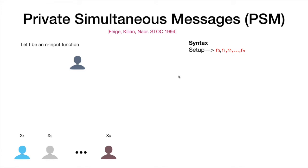The private simultaneous message model was introduced in STOC 1994 by Feige et al. In this work the authors wanted to consider a model that would allow the parties to securely evaluate a function with just one round of interaction. We know this is not possible in general unless we put some restrictions or change the model, and that's exactly what the authors did. They consider a setting where there are two types of entities: the evaluator, which wants to understand the output of the function, and a set of parties that are the only parties that have inputs.